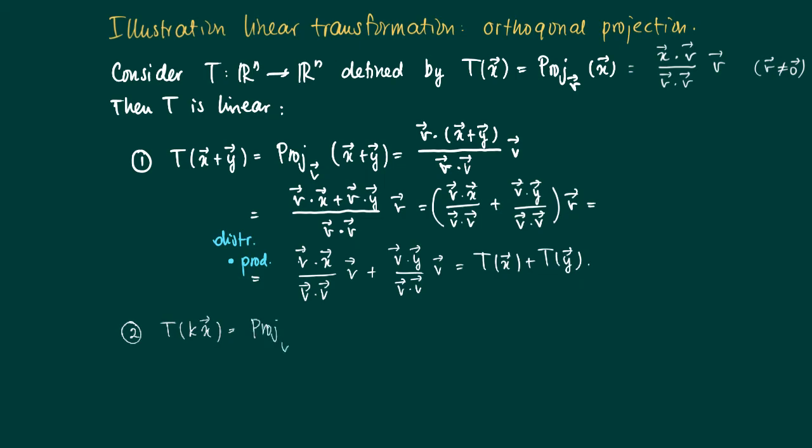The second property: if we scale up X by a scalar K, we need to show that this equals K times the projection of X.